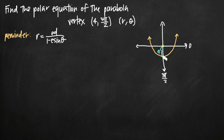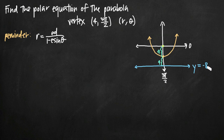That means the distance between the vertex and the directrix also needs to be 4. So if we graph the directrix right here, that's going to be the line y equals negative 8. That means our value for d is going to be 8, because this is really y equals negative d, and d itself is just the value outside the minus sign, which is 8.